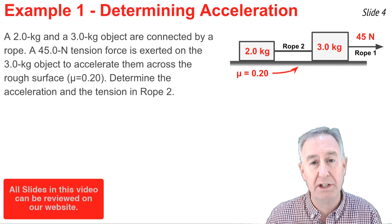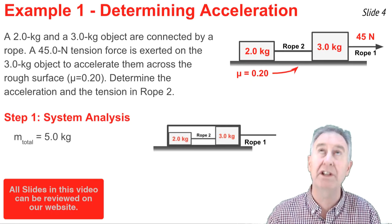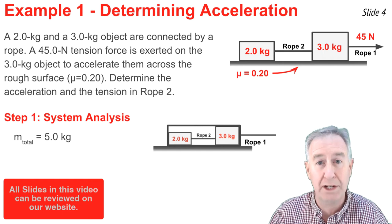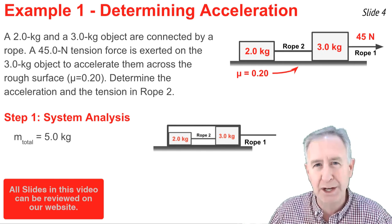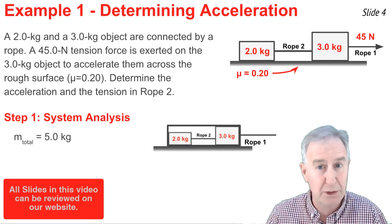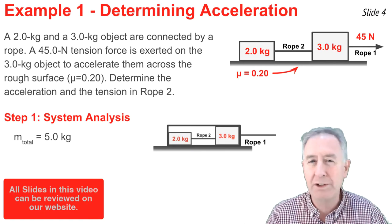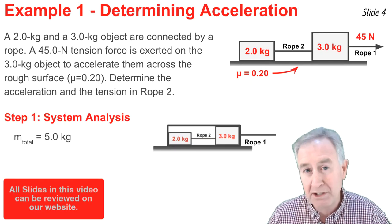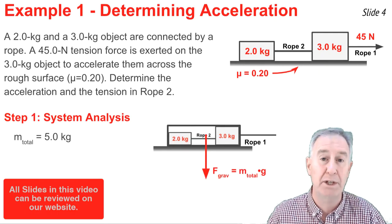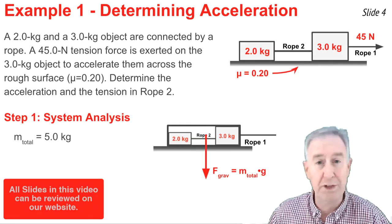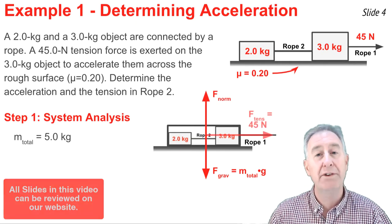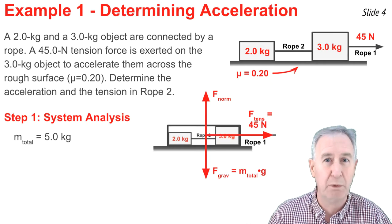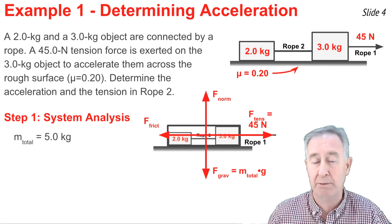I begin with a system analysis to determine the acceleration. I treat the two objects as one, so rope two becomes internal to the system and is not considered in the analysis. The mass of the system is two kilograms plus three kilograms, or five kilograms. Drawing a free body diagram: there's a downward gravity force, the normal force from the surface, the 45 Newton tension from rope one acting from outside the system, and friction from the five kilograms sliding across the surface.